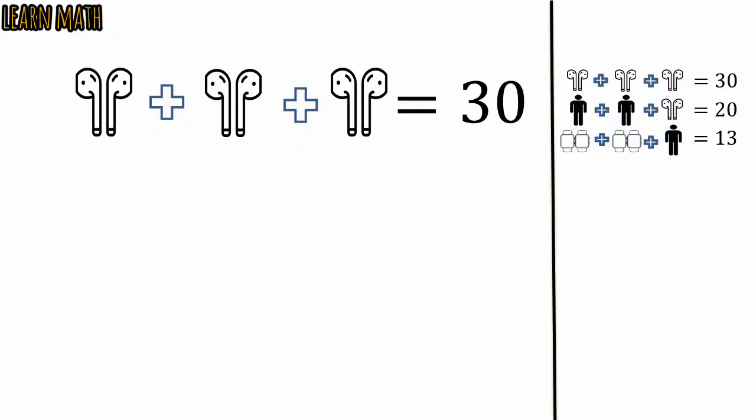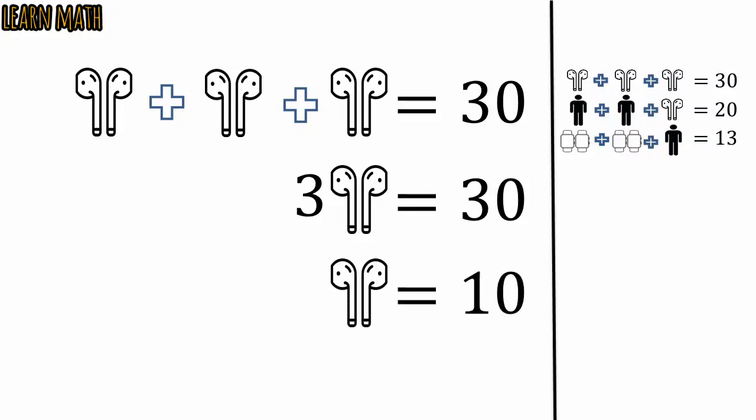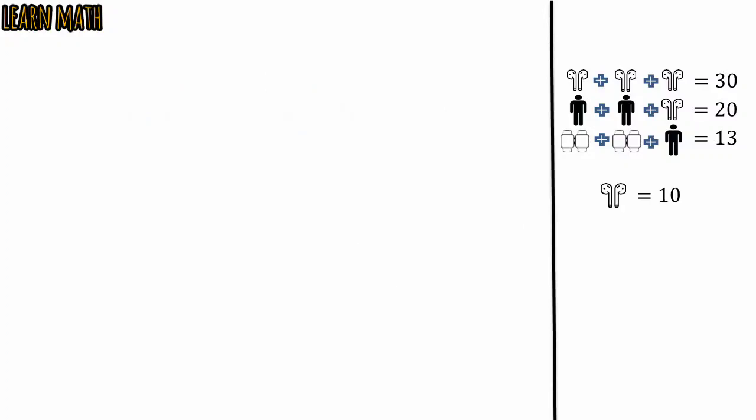Dividing both sides by 3 and we will get ear parts is equal to 10. So one pair of ear parts is equal to 10.